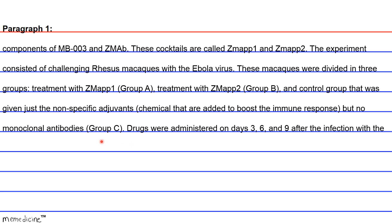That was Group C. Drugs were administered on days three, six, and nine after infection with the virus. The survival rates of each group are shown in Figure 1.